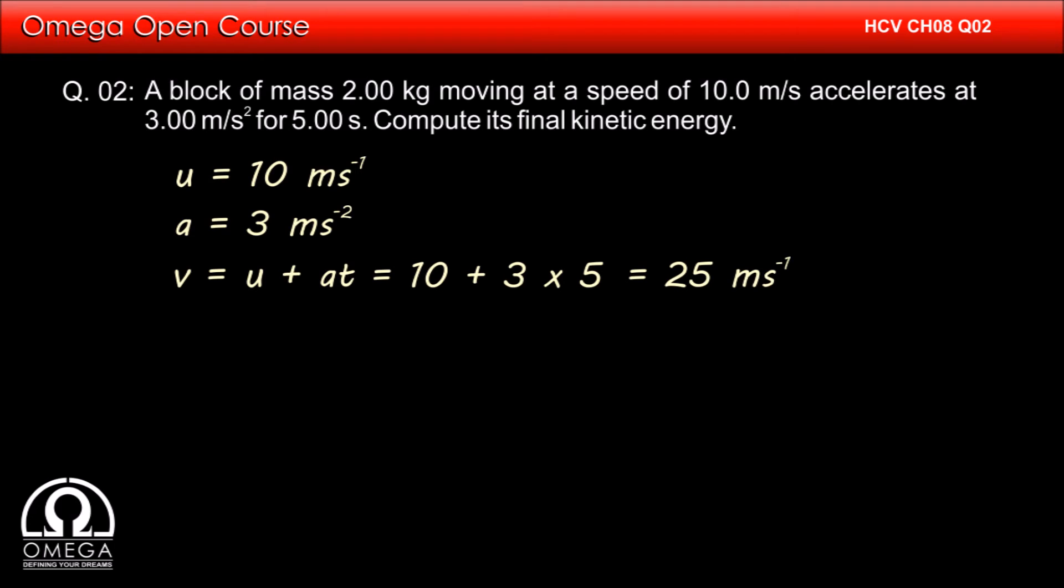Now the final kinetic energy of the block equals half mv squared, that is half times 2 times 25 times 25. Simplifying, we get 625 joules. This is our answer.